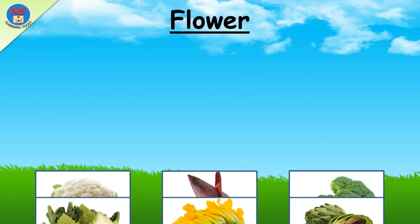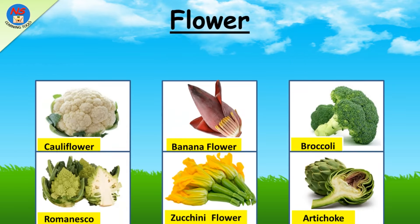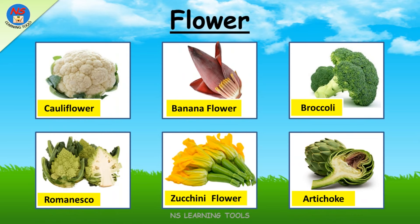Some examples of flower plants: cauliflower, banana flower, broccoli, romanesco, zucchini flower, artichoke.